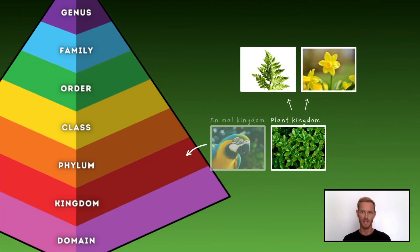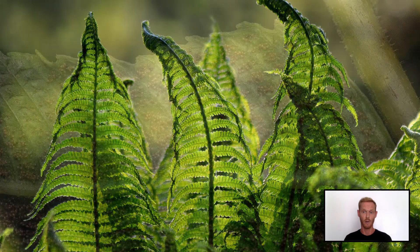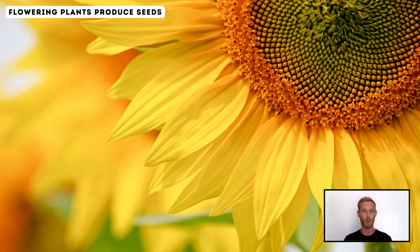For extended you also need to state the main features used to place organisms into groups within the plant kingdom. The two groups you need to know are ferns and flowering plants. Ferns are land plants whose stems, leaves and roots are very similar to those of flowering plants, although the stems of ferns are usually completely below ground. Ferns do not produce seeds; instead they produce single-celled spores which are released from the many sporangia on the underside of the leaves. Flowering plants, by comparison, reproduce by seeds that are formed in flowers.